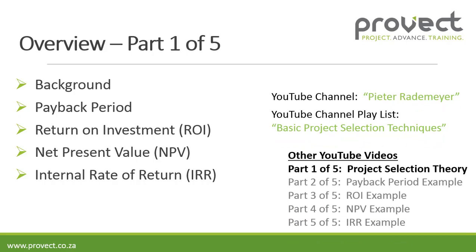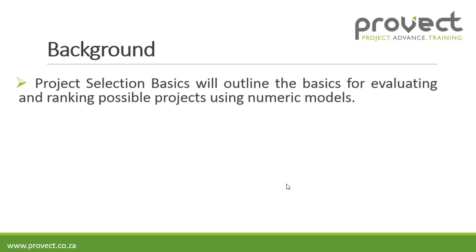The other videos that form part of this series are: part two of five — the payback period examples, part three of five — return on investment example, part four of five — net present value example, and part five of five — the internal rate of return example. These videos you can access through my YouTube channel by typing Peter Armer in the YouTube search, and in the channel you can go to the playlist 'Basic Project Selection Techniques.'